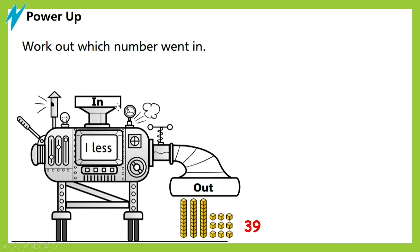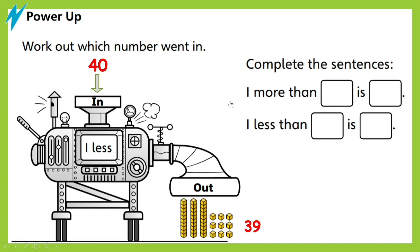So can you now figure out which number went in? Excellent, 40. 40 went in, and then it says here one less, and so 39 came out. Now let's complete these sentences using these numbers. Say the sentences with me. One more than 39 is 40, and one less than 40 is 39. You are doing great.